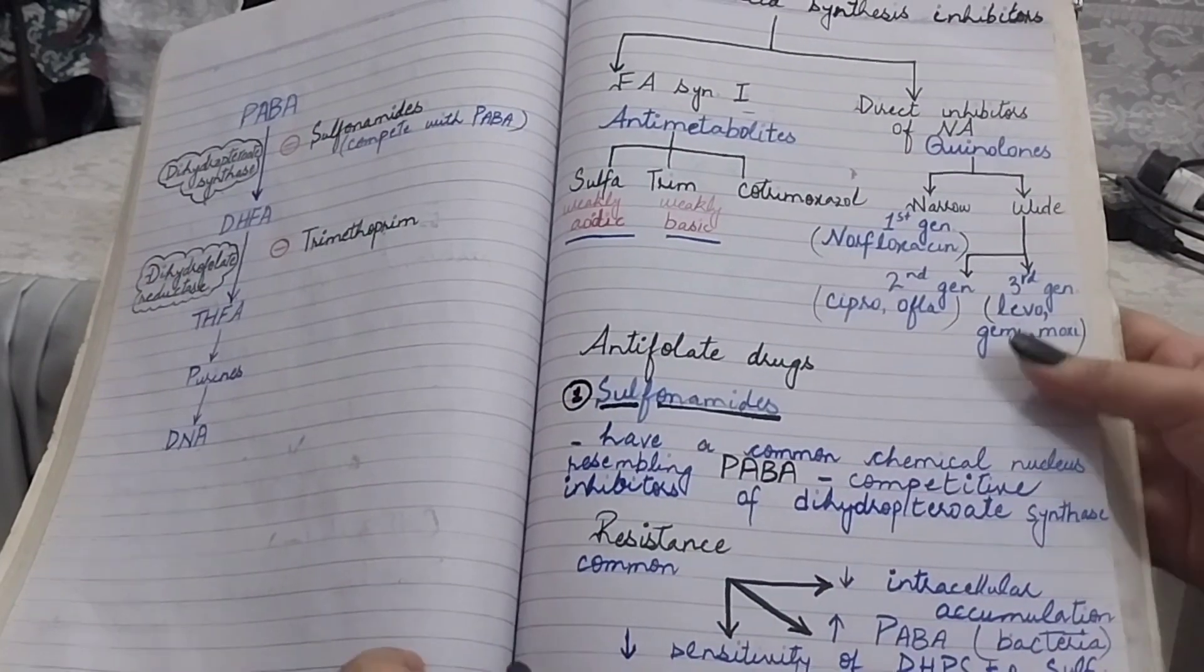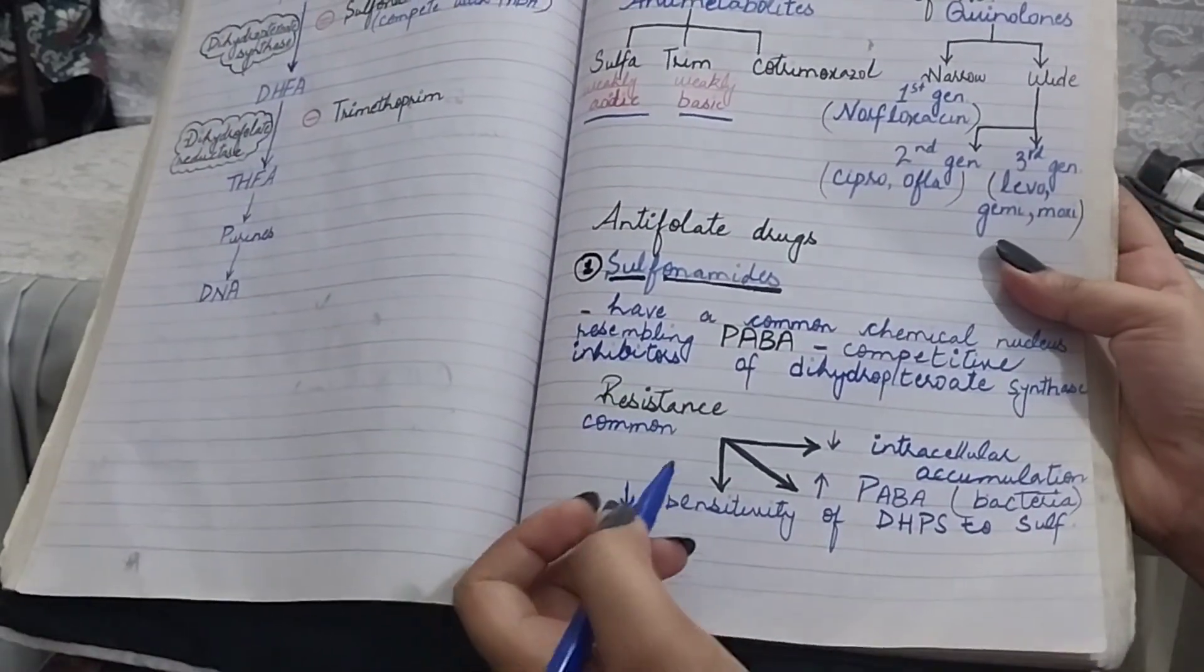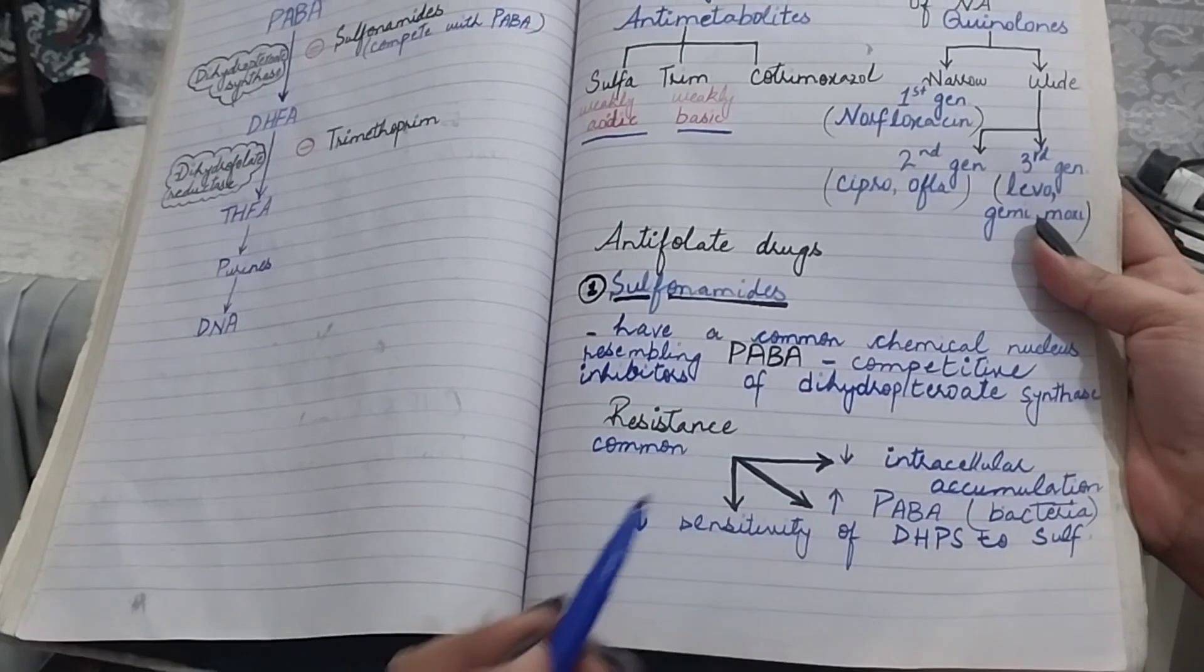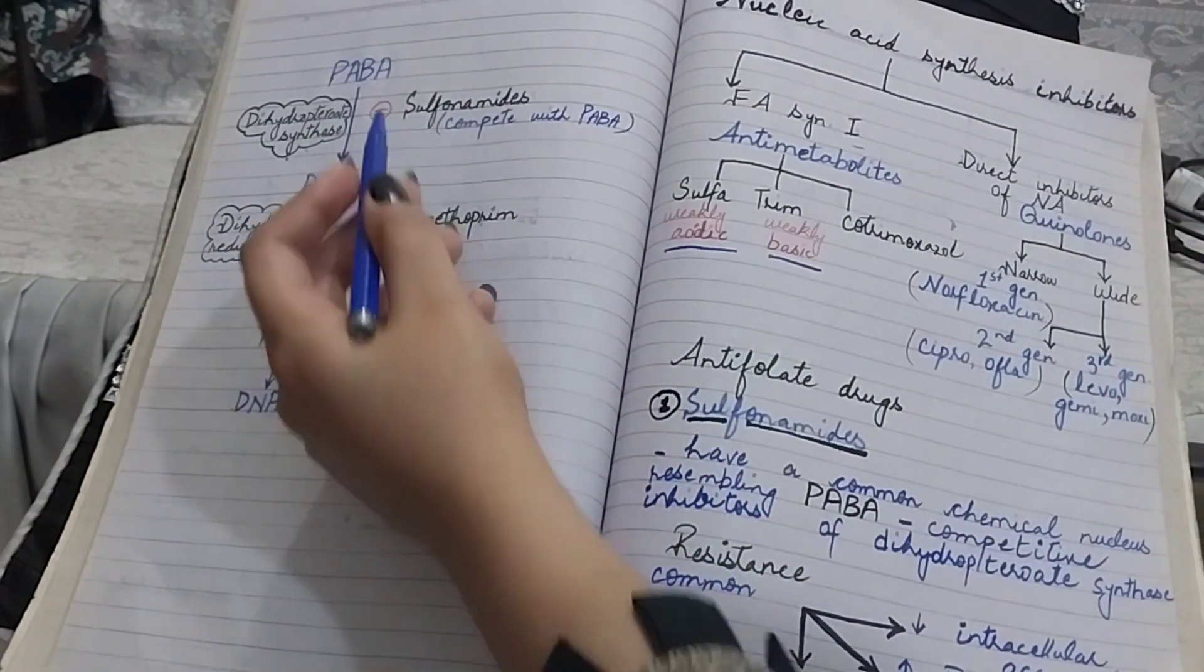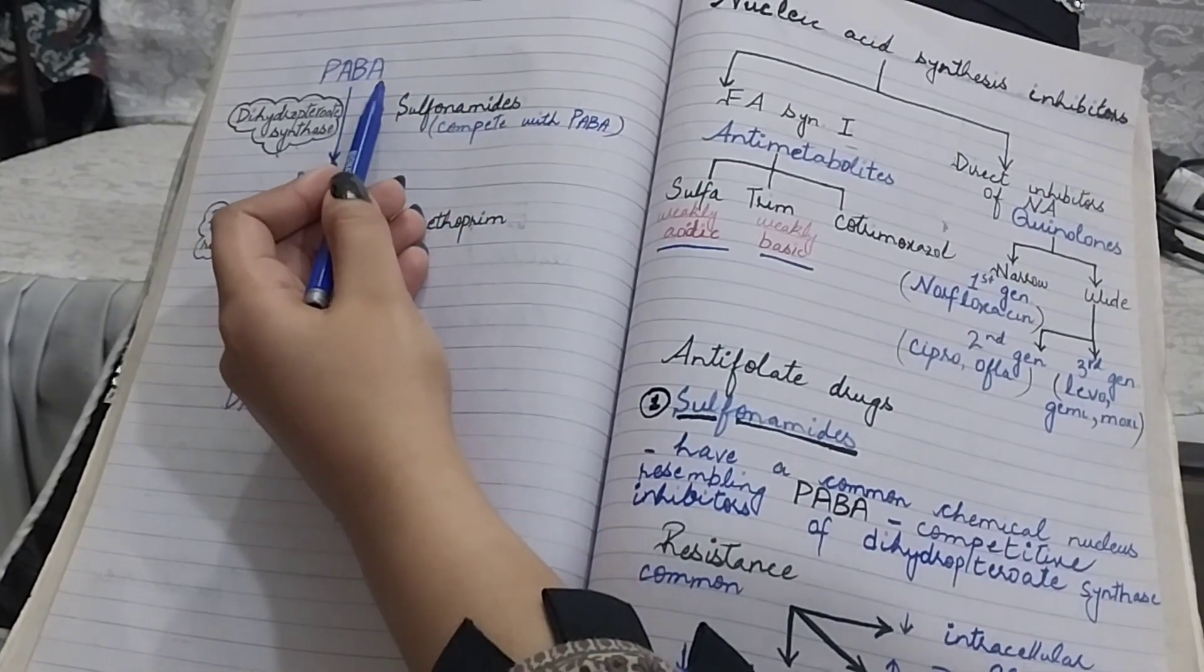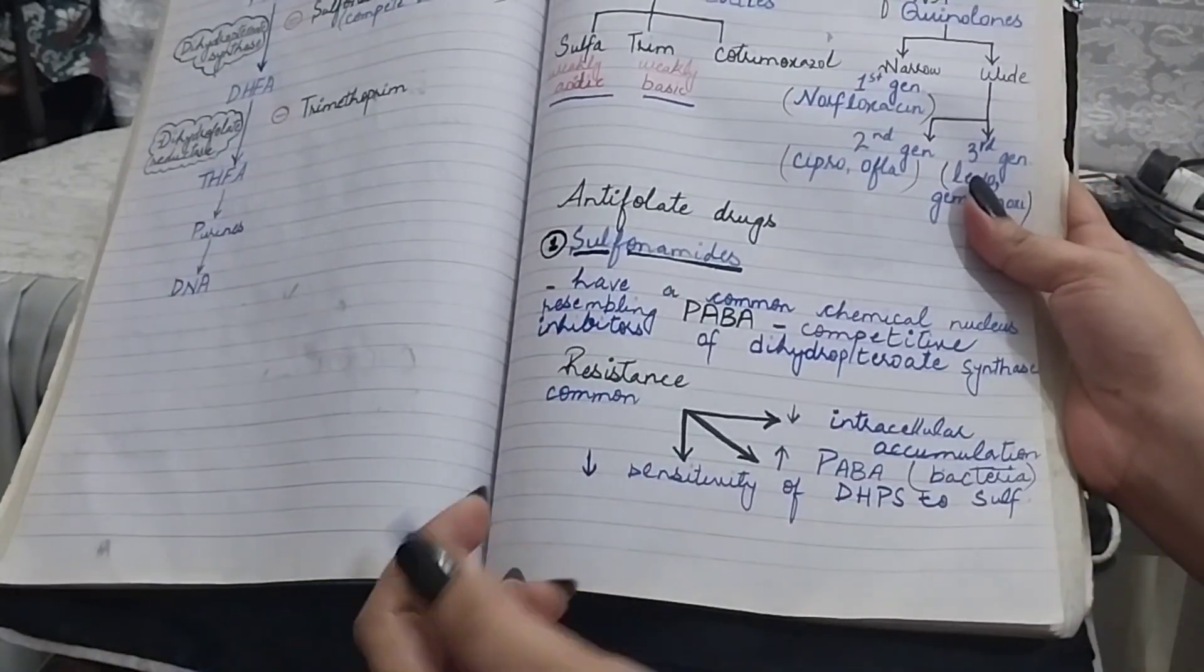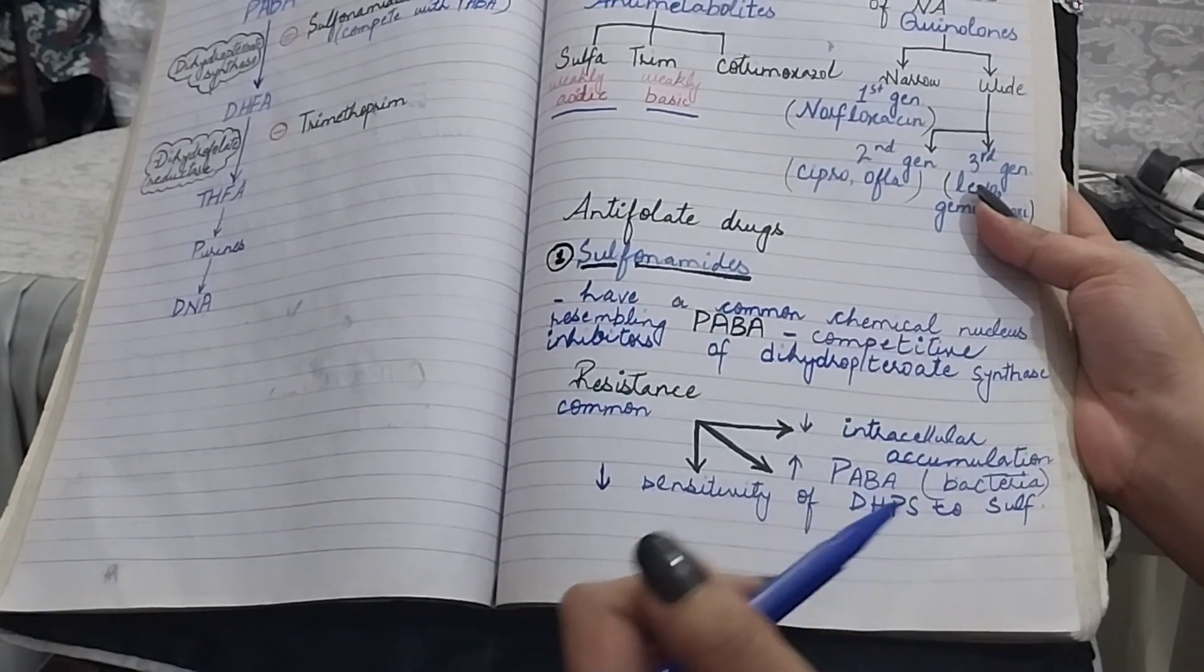Let's see the resistance. Resistance to sulfonamide is common. It can be because of decreased intracellular accumulation of drug, or maybe because of increased production of PABA. If the production of PABA is increased, it can overcome the effect of sulfonamides. Resistance can also happen because of decreased sensitivity of dihydropteroate synthase to sulfonamides.